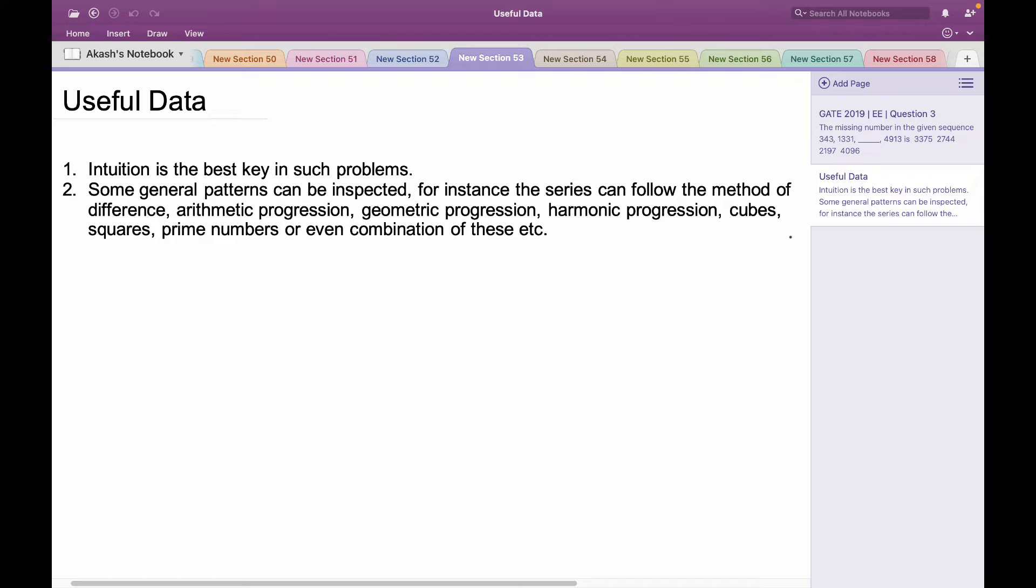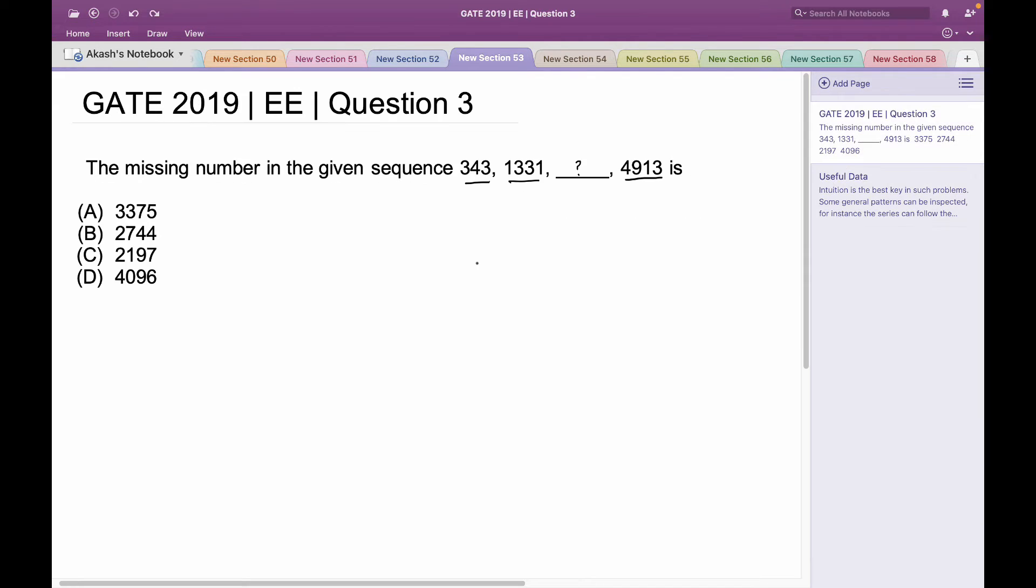Let's use this idea and try to solve the problem. Looking at the first two numbers, I can safely say that these numbers are actually the cubes of certain entities. For example, 343 is the cube of 7.